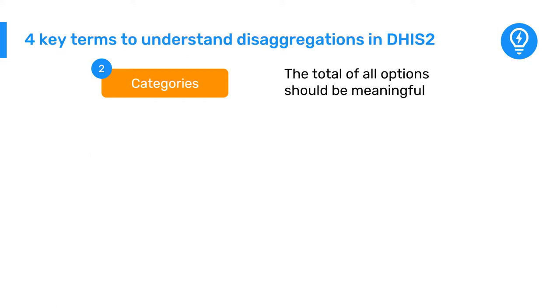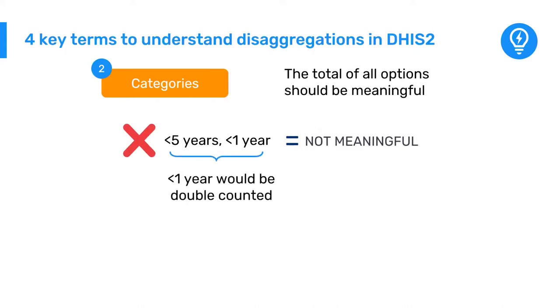For example, you would not want to create a disaggregation that combined both less than five years and under ones, since the total would not be meaningful as there would be a double counting happening with those that are under one year old.